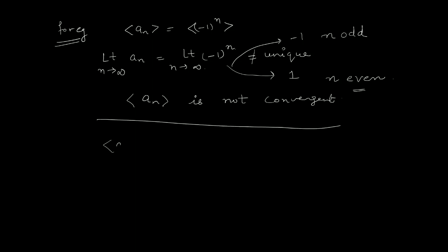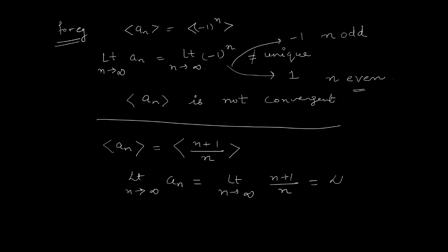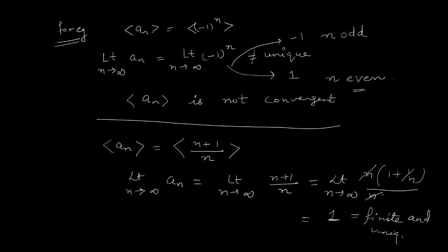So whenever we have different limits, the sequence is not convergent. One more example: let the nth term be (N+1)/N. We find the limit as N approaches infinity of (N+1)/N, and this limit will be 1. Since it is finite and unique, therefore our sequence is convergent and 1 is the limit of this sequence.